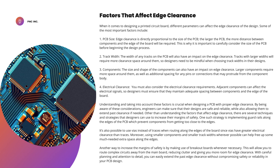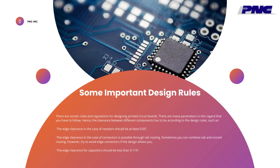There are several techniques and strategies that designers can use to increase their margins of safety. One such strategy is implementing guard rails along the edges of the PCB, which prevent components from getting too close to the edges. It's also possible to use vias instead of traces when routing along the edges of the board, since vias have greater electrical clearance than traces. Using smaller components and smaller track widths wherever possible can help free up extra space along the edges. Another way is by making use of breakout boards, which allow you to route complex circuits away from the main board, reducing clutter and giving you more room for edge clearance.